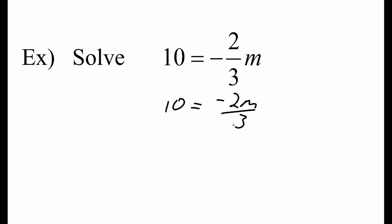Now to undo divide by 3, we can multiply both sides by 3. 3 divided by 3 equals 1, so those cancel out, leaving us with negative 2m on the right side. 3 times 10 is 30.